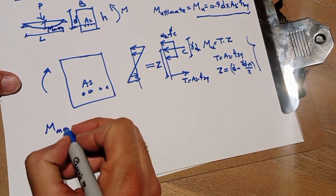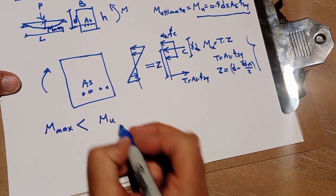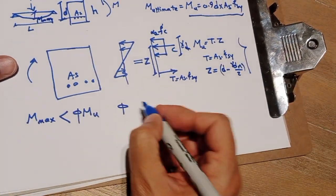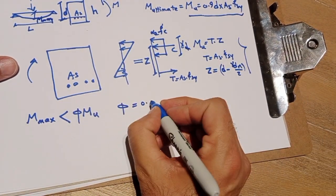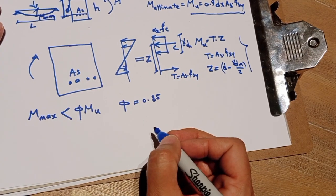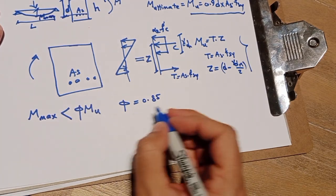M max for design should be less than ultimate bending moment, but reduced value. Phi is generally about 0.85, but it may change in different standards. So if we use 0.85 for phi, reduction factor,